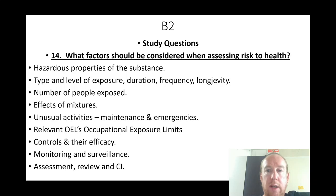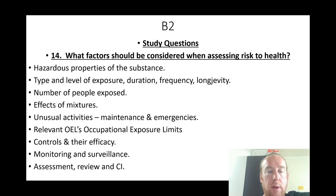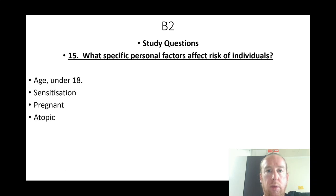What factors should be considered when assessing a risk to health? Hazardous properties of the substance, type and level of exposure, duration, frequency, the task involved, number of people exposed, effects of mixtures, unusual activities like maintenance and emergencies, relevant OELs (occupational exposure limits), controls and their efficacy, monitoring and surveillance, and assessment review and continual improvement.